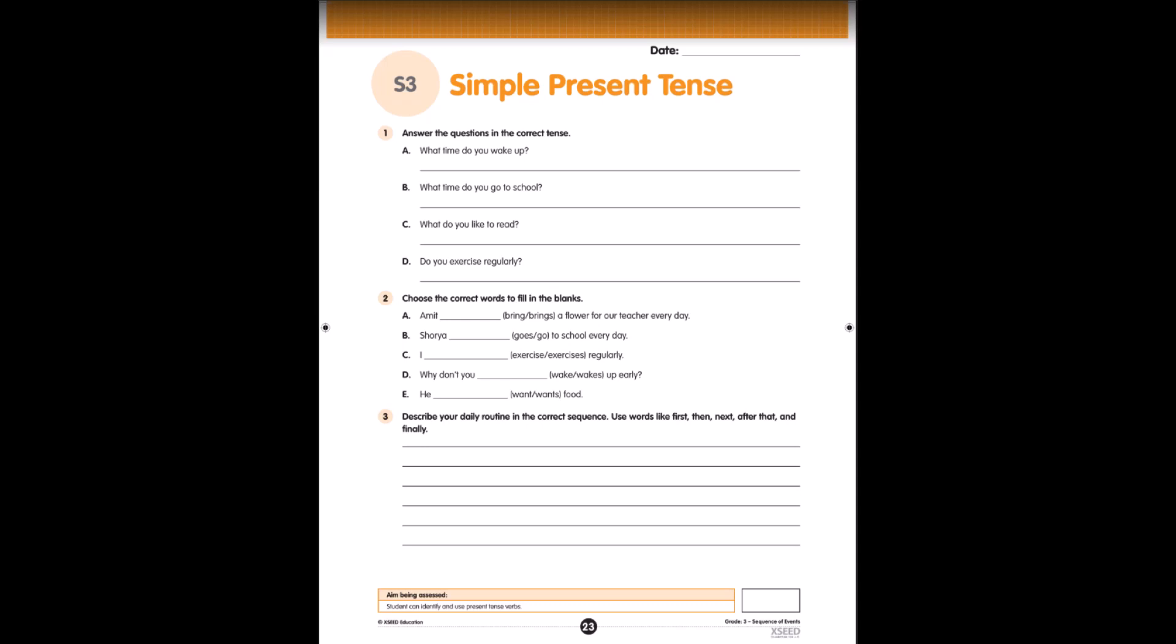Now, we'll move to the third question. Describe your daily routine in the correct sequence. Use words like first, then, next, after that, and finally. How will you write? For example, first, I wake up. Then, I brush my teeth. Next, I eat my breakfast. Like this, you can complete that. So you have to use the words first, then, next, after that, and finally.